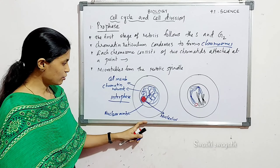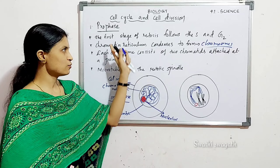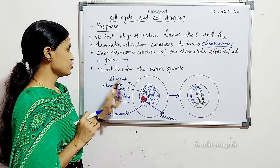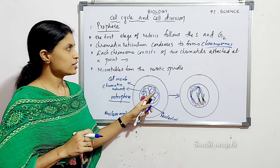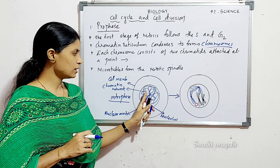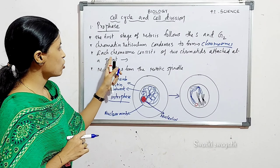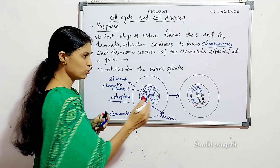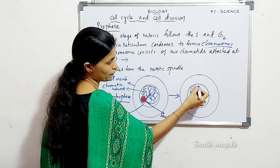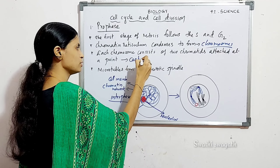When interphase enters M phase, the first stage is prophase. The chromatin reticulum or chromatin network condenses to form rod-shaped chromosomes. Each chromosome consists of two chromatids — called sister chromatids — attached at a point of primary constriction called the centromere.